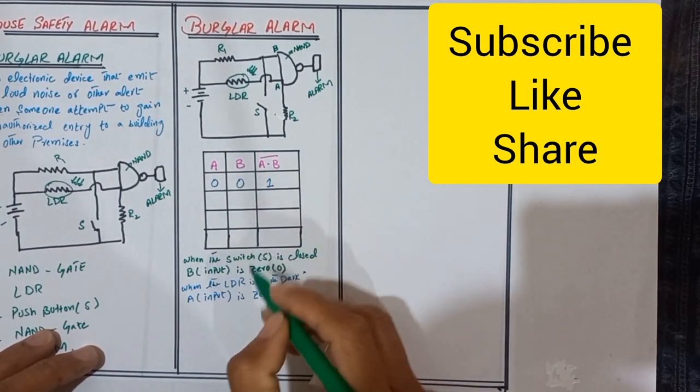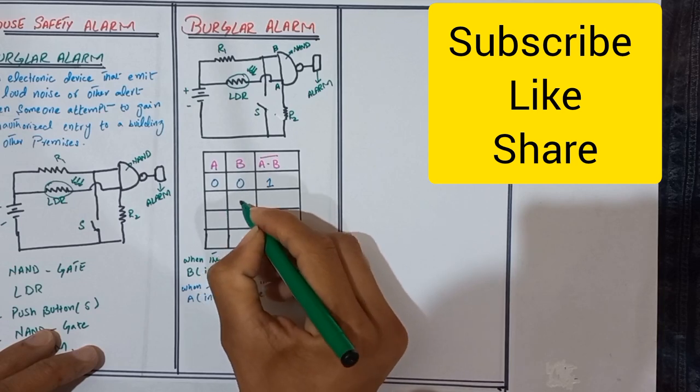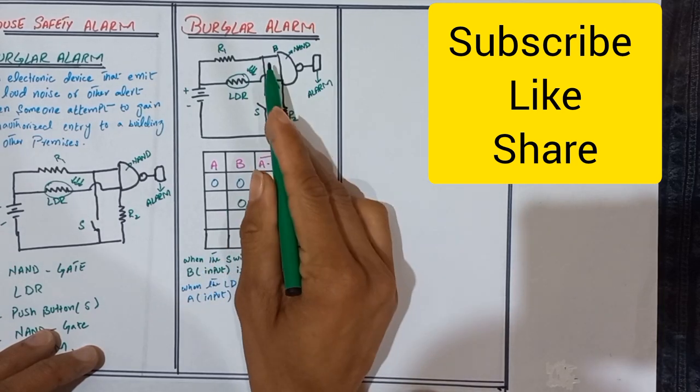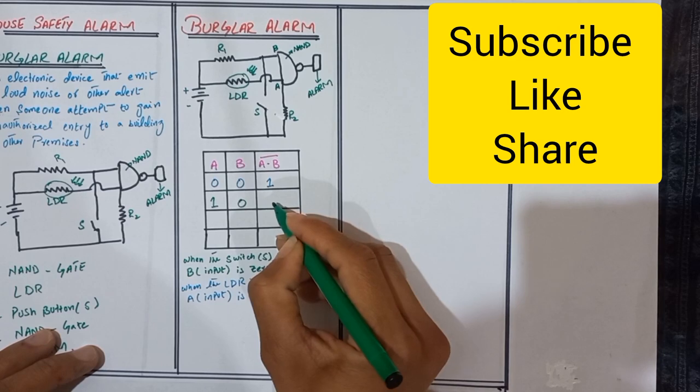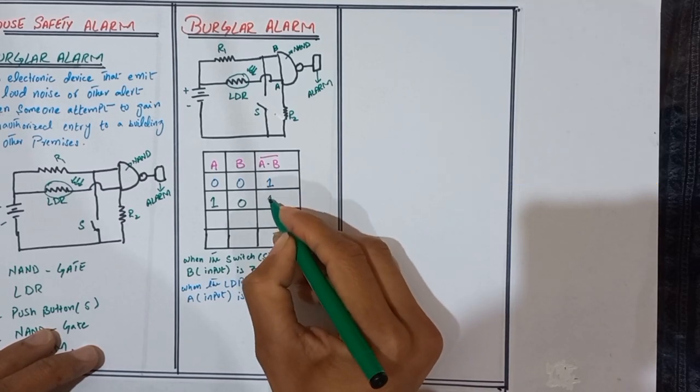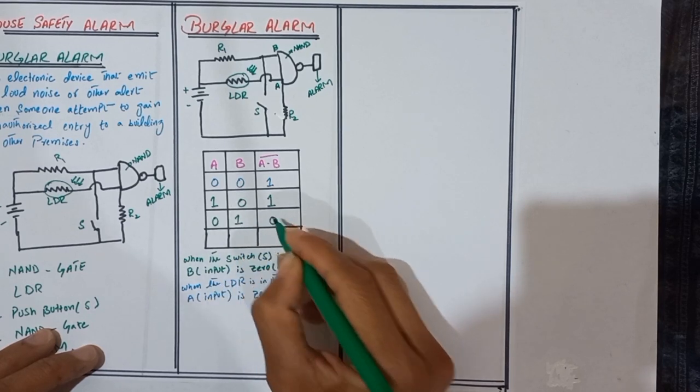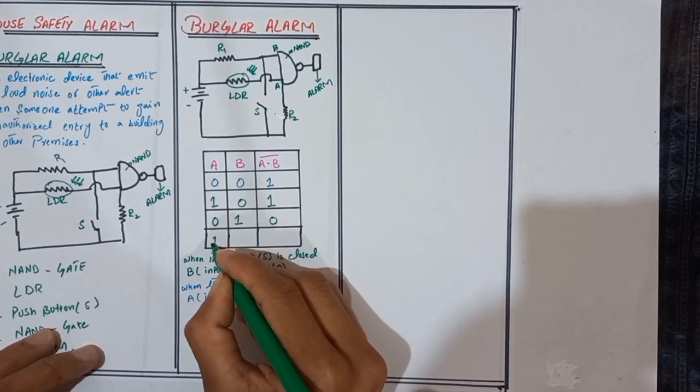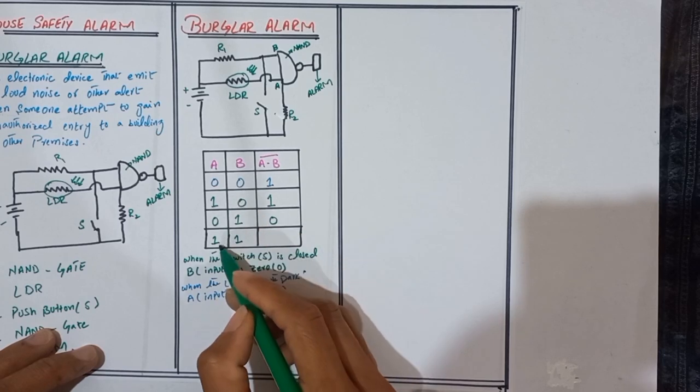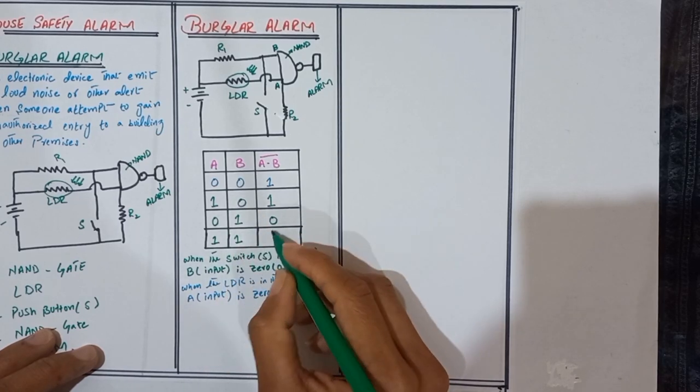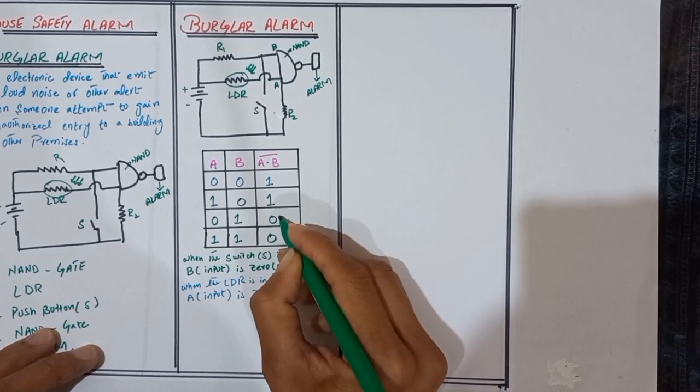Similarly we get when the switch S is closed and the LDR circuit is on, in output we get zero. If A is zero and B is one, output is one. In output we get zero. Similarly if light falls on the LDR circuit and the switch S is open, in output we get zero.